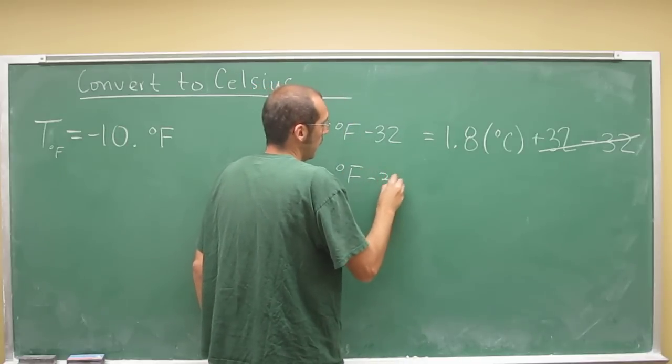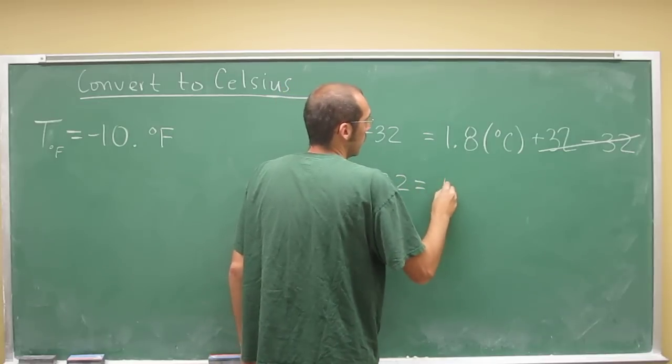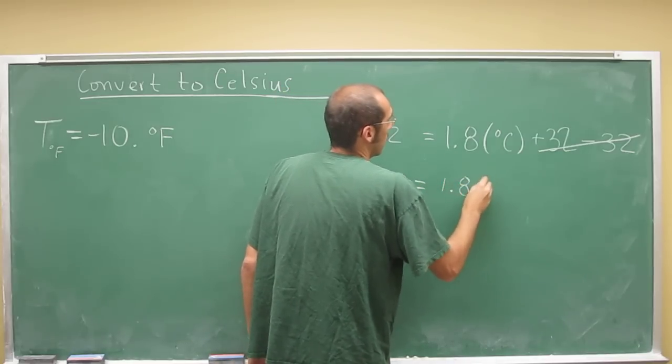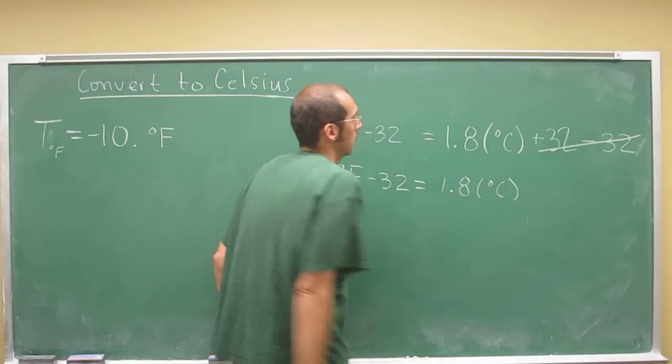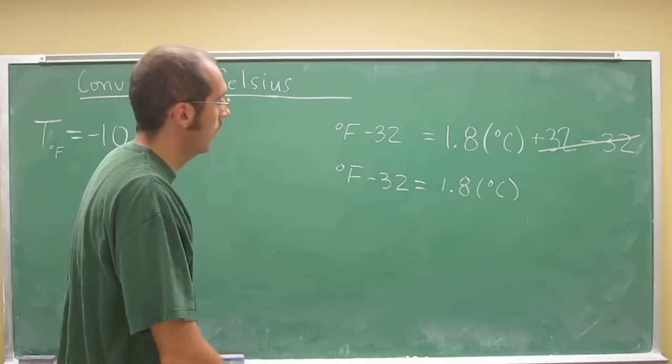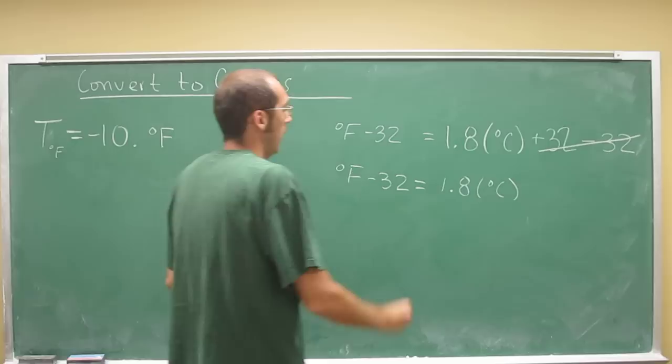We've got degrees Fahrenheit minus 32 equals 1.8 times degrees Celsius. So is degrees Celsius isolated yet? No. So how do we do that?